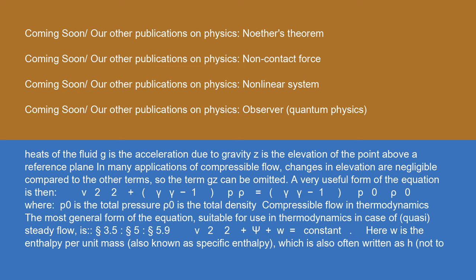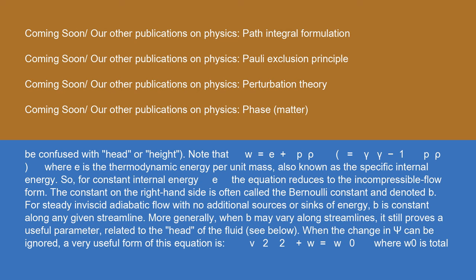Compressible flow in thermodynamics: the most general form of the equation, suitable for use in thermodynamics in case of quasi-steady flow, is: v²/2 + ψ + w = constant, where w is the enthalpy per unit mass, also known as specific enthalpy, which is also often written as h (not to be confused with head or height). Note that w = e + p/ρ = γ/(γ−1) · p/ρ, where e is the thermodynamic energy per unit mass, also known as the specific internal energy.